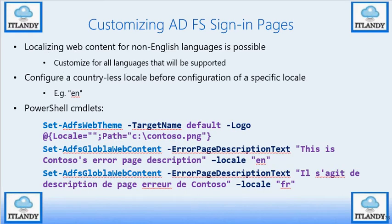Localized content for non-English languages is also possible. For example, if you have a multi-node setup with each node in a different region, you can customize it to fulfill the requirements for each zone — German, French, Chinese, or any other language. There is a PowerShell command you can run to localize the content.